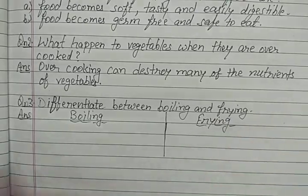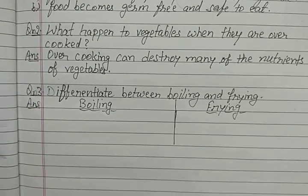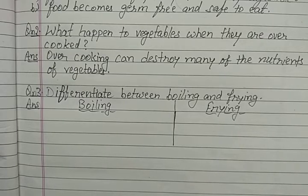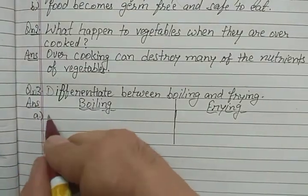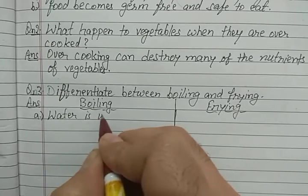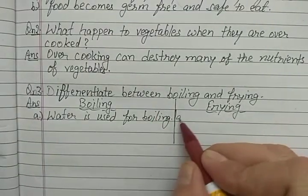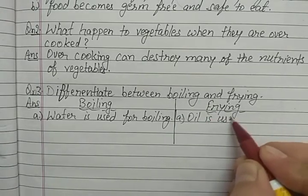What is used for boiling? For boiling, we use water. And in case of frying, what do we use? We use hot oil. So water is used for boiling, and oil is used for frying.